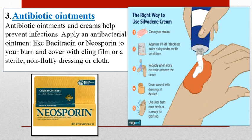Number three: antibiotic ointment. Antibiotic ointments and creams help to prevent further infection, as burns cause disruption in the layers of the skin. Apply an antibacterial ointment like bacitracin or Neosporin to the burn and cover with cling film or a sterile non-fluffy dressing or cloth. Clean the wound first and apply the cream directly to the burn area.